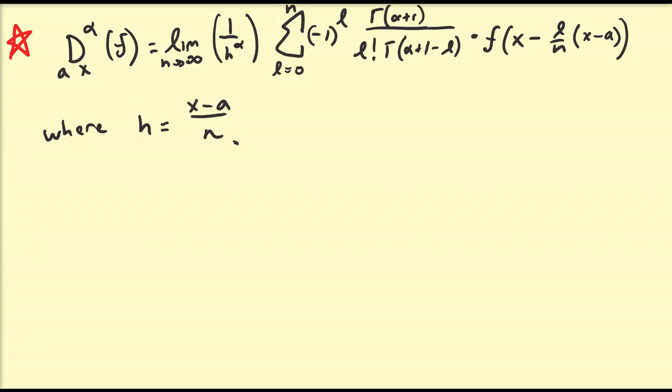Hello there. In this video, we're going to continue our discussion of fractional calculus. In some previous videos, we derived what we call the Grünwald-Letnikov derivative representation for the fractional derivative operator d of order alpha with terminal points a and x of some function of x, which is defined to be equal to the limit of this series here, which has h, gamma, and the terminal points of interest. Here h is pretty much like our partition length, and x minus a over n is another way of looking at that expression.